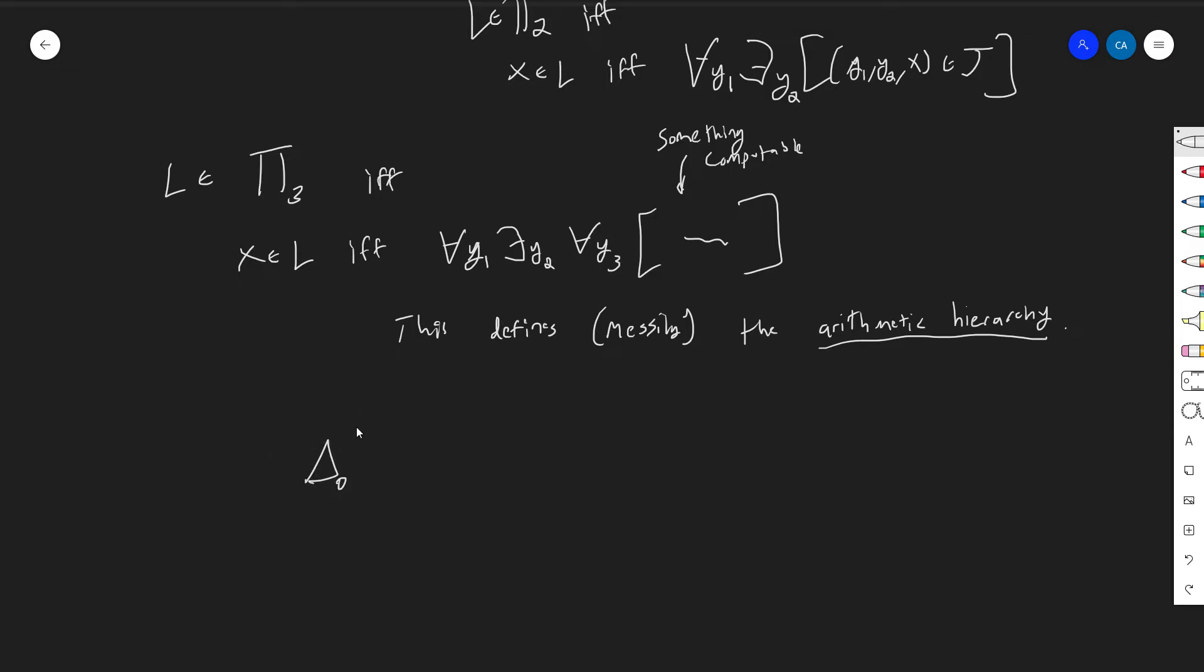This defines the arithmetic hierarchy, and the picture that you kind of draw a lot of the time is you have this delta zero here, that's R, and then you can go up to these pi classes, go down to these sigma classes, sorry, one, and then if you intersect them again, you get delta two, delta one, and then you kind of go up again, down again, and that's the hierarchy. It goes like that.